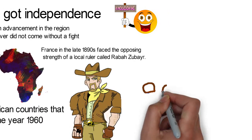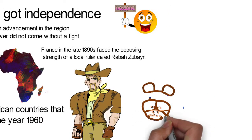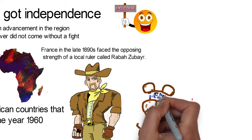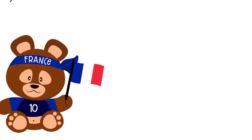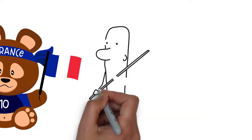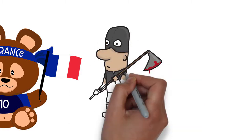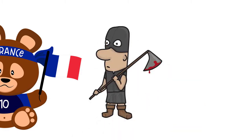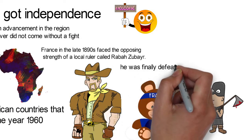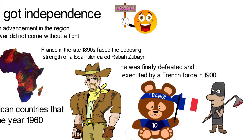Rabah had only recently established a strong kingdom at Bagoumi, east of Lake Chad, before the French arrived. An ex-slave and an active slave trader, Rabah proved to be a challenging adversary for the French. However, he was finally defeated and executed by a French force in 1900.